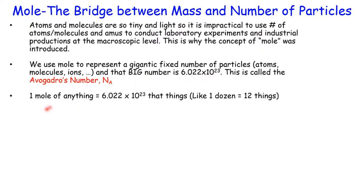One mole of anything equals 6.022 times 10 to the 23rd of that thing — whether that thing is an atom, a molecule, or an ion. This is much like the unit 'dozen' used in the United States. If we say one dozen, we mean 12 of those individual things. So one dozen eggs means there are 12 eggs.